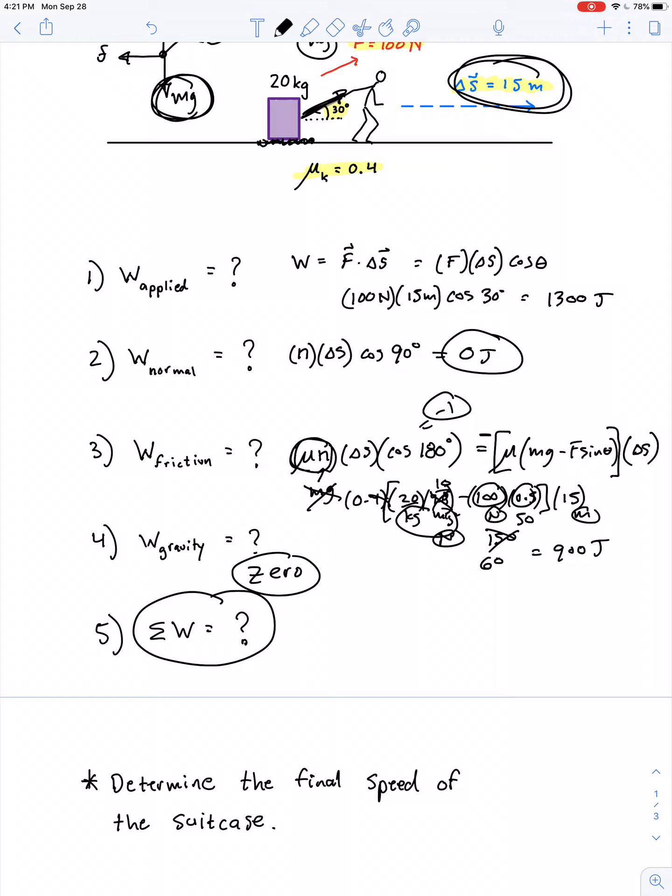I caught a mistake. The work done by friction, I almost got it right. It's not 900 joules, it's negative 900 joules. There we go. So the net amount of work is positive 1,300 joules minus 900 joules for a total of 400 joules.